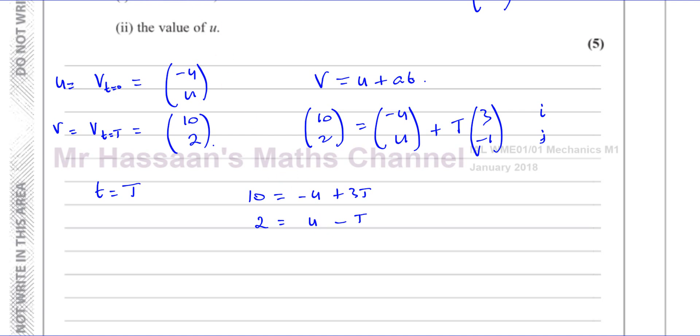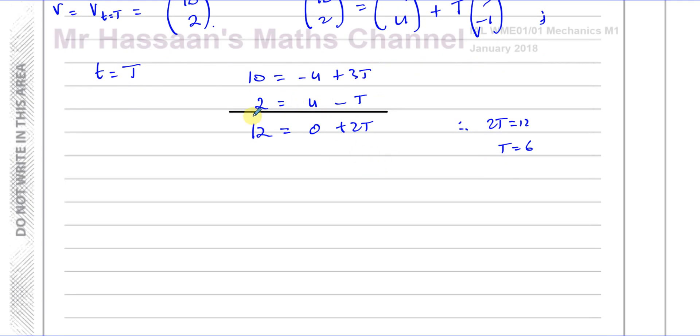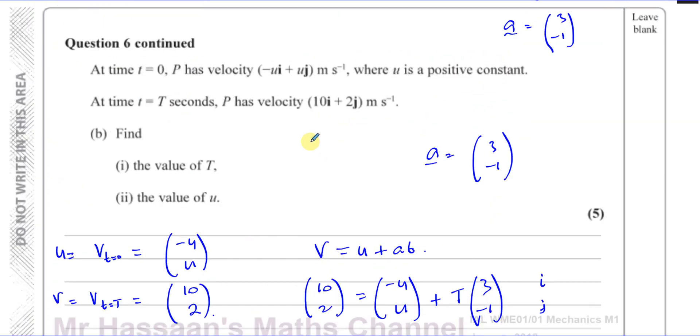If I add the two equations together, that will eliminate the u's because I have different signs. So I'm going to get 12 equals 2T. So T equals 6. I found the value of T. Now to find the value of u, I can use this equation: 2 equals u minus 6. So 8 equals u. So we have T equals 6 and u equals 8, and those are the solutions to this problem.